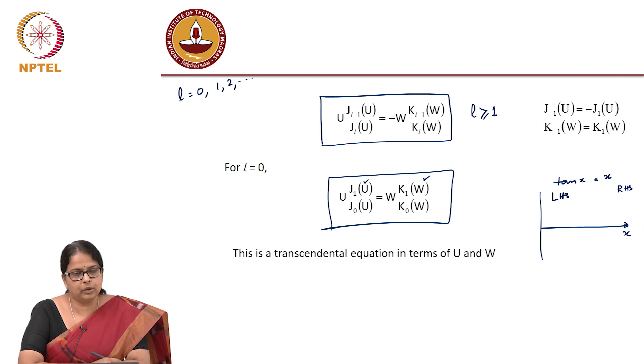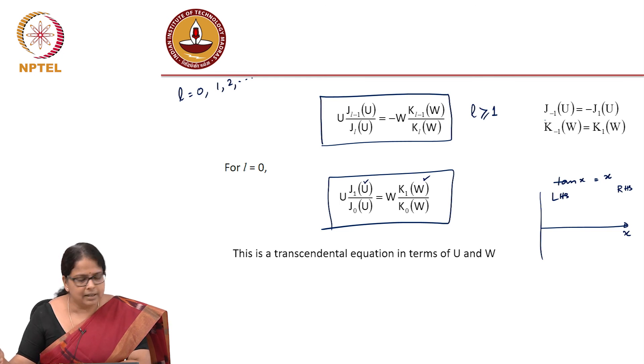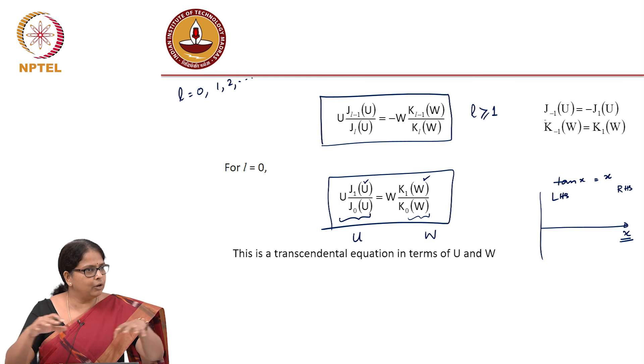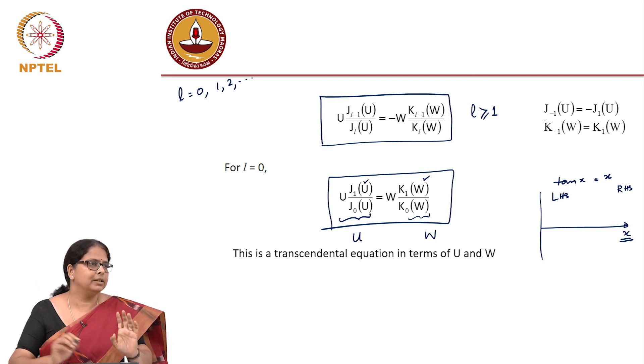So this is a transcendental equation in U and W. So you will have to basically plot for, so let's say for example, we are calculating for L equal to 0. We have to plot J_L for different values of U, the left hand side and then K right hand side for different values of W. Is it possible to arrive at a solution like that? If it was tan x equal to x kind of equation, we can say as a function of x, we can plot the left hand side and the right hand side. But it turns out that the left hand side is a function of U and the right hand side is a function of W. So how do I now look at the point of intersection? My x axis itself is changing for two plots. So this is not going to work. You need to do a little bit more work.